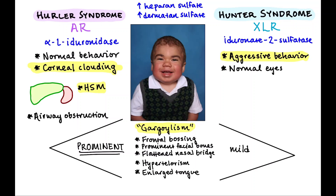There's a flattened nasal bridge, hypertelorism, and macroglossia, or an enlarged tongue. Some of those things you see in acromegaly, and you'll see this in a child gradually developing, although it can be present at birth. We would not see acromegaly in children — we would see that in adults — but you see some of the similar features. Another thing that these two have in common is the collection of mucopolysaccharides, because we're unable to degrade them, and those mucopolysaccharides are chiefly heparan sulfate and dermatan sulfate.